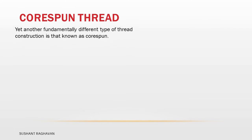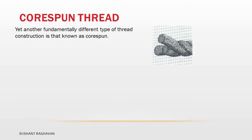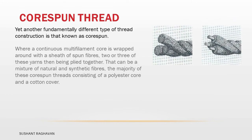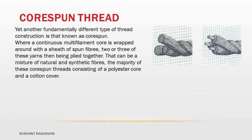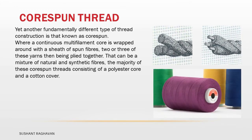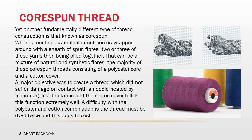Core spun thread. Yet another fundamentally different type of thread construction is that known as core spun, where a continuous multifilament core is wrapped around a sheath of spun fibers, two or three of these yarns then being plied together — this can be a mixture of natural and synthetic fibers. The majority of these core spun threads consist of a polyester core and a cotton cover. A major objective was to create a thread which did not suffer damage on contact with the needle heated by friction against the fabric, and the cotton cover fulfills this function extremely well. A difficulty with the polyester and cotton combination is that the thread must be dyed twice, which adds to cost.